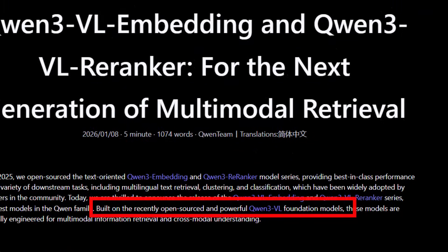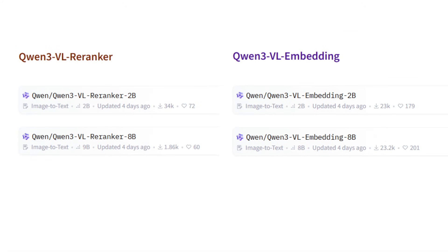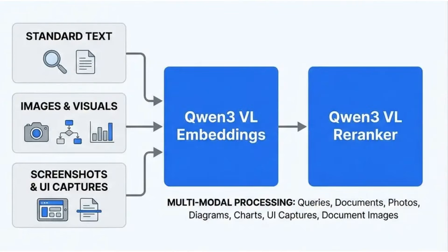Looking at the Qwen 3 VL embedding and reranker models, they're built on the Qwen 3 VL vision-language foundation models. There are two sizes: a 2B model and an 8B model, both under Apache 2 license and available on Hugging Face. They can process standard text, images, photos, diagrams, charts, screenshots, UI captures, and even sequences of images for video clips or presentations. You can also mix modalities — text followed by an image followed by more content.